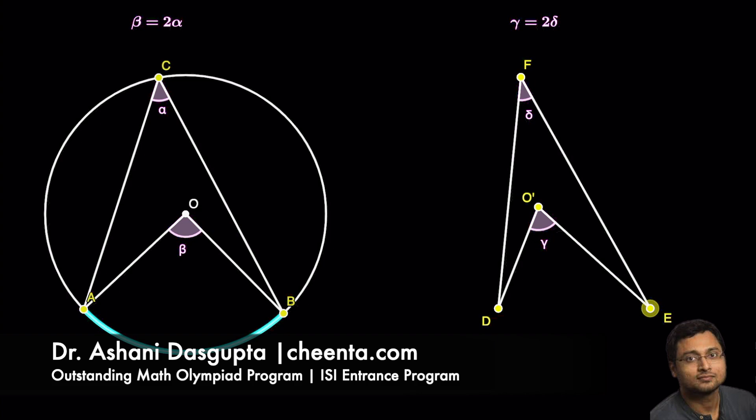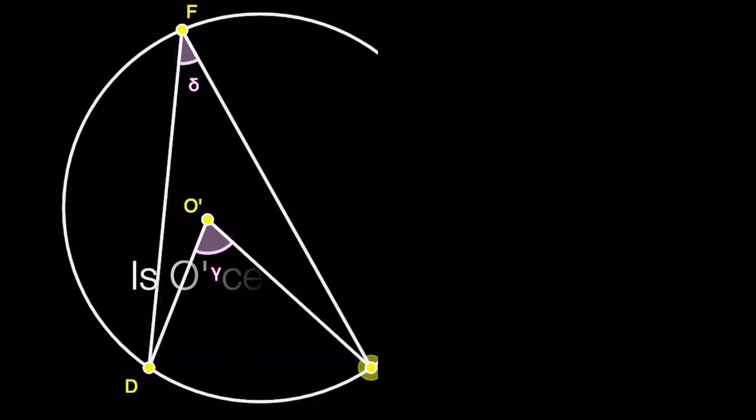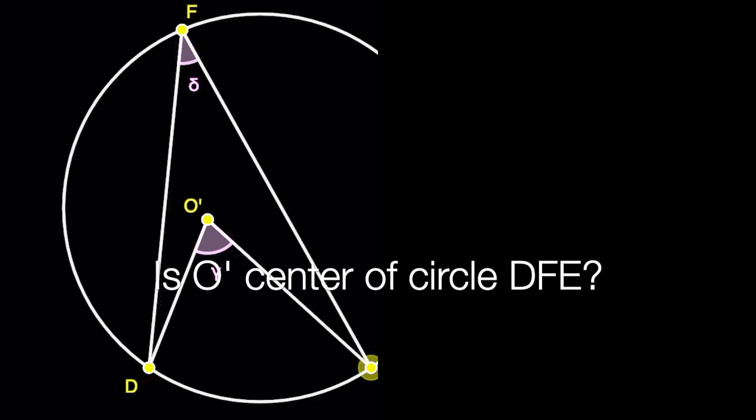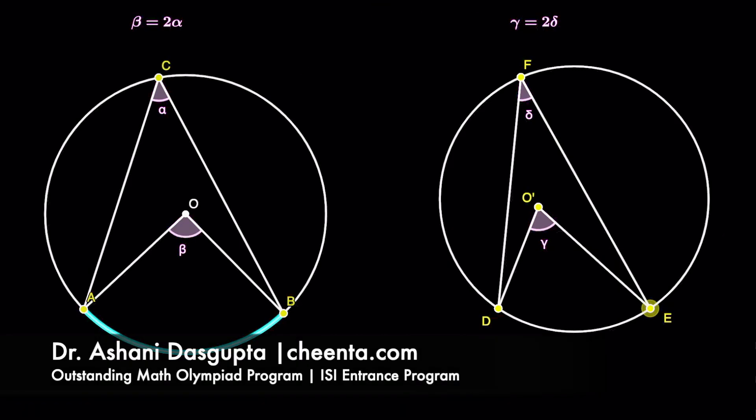Now, is it necessary that O' is the center of this circle through D, F, E, just because the angle at O' is twice the angle at F? It's not. Many students make this mistake. This is a simple error that we make. We try to use the converse of this theorem on the left-hand side.